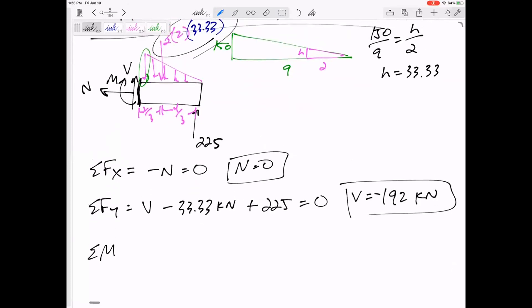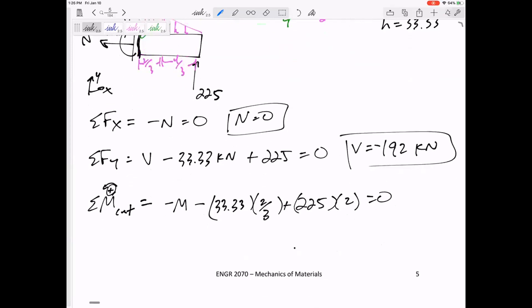I can sum the moments at any point. I like to sum the moments about the cut, but you can sum the moments about any point. I sum the moments about the cut because N goes straight through the cut and V goes straight through the cut. All right, I've got M, but that is negative. Why is that negative? Because these three equations are defined by my axes. Actually, these three equations are really just defined, whatever you define as positive. And I always define positive as counterclockwise. All right. So I've got negative M. I've got 33.33 acting two-thirds meters away, creating a negative moment. And then I've got 225 acting two meters away, creating a positive moment equals zero.